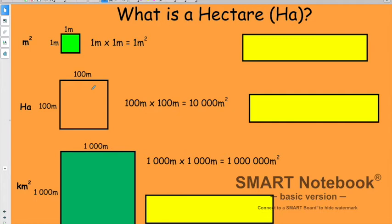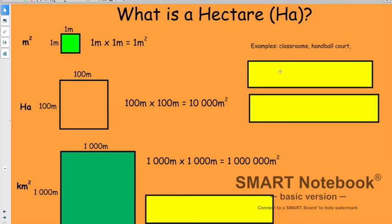Let's have a think: what kinds of things might we use each one of these measurements to measure? Square meters - this should be revision. Here are some examples: the amount of surface or the amount of carpet in your classroom, a handball court could be included as well, and I'm sure you could think of some other examples.